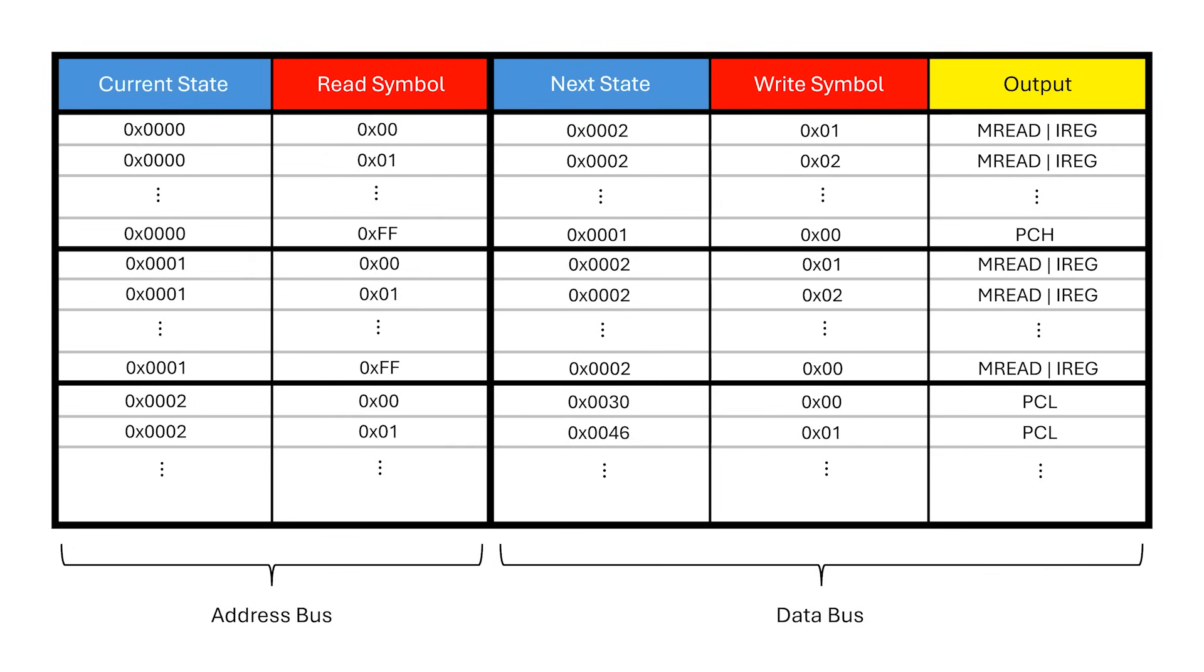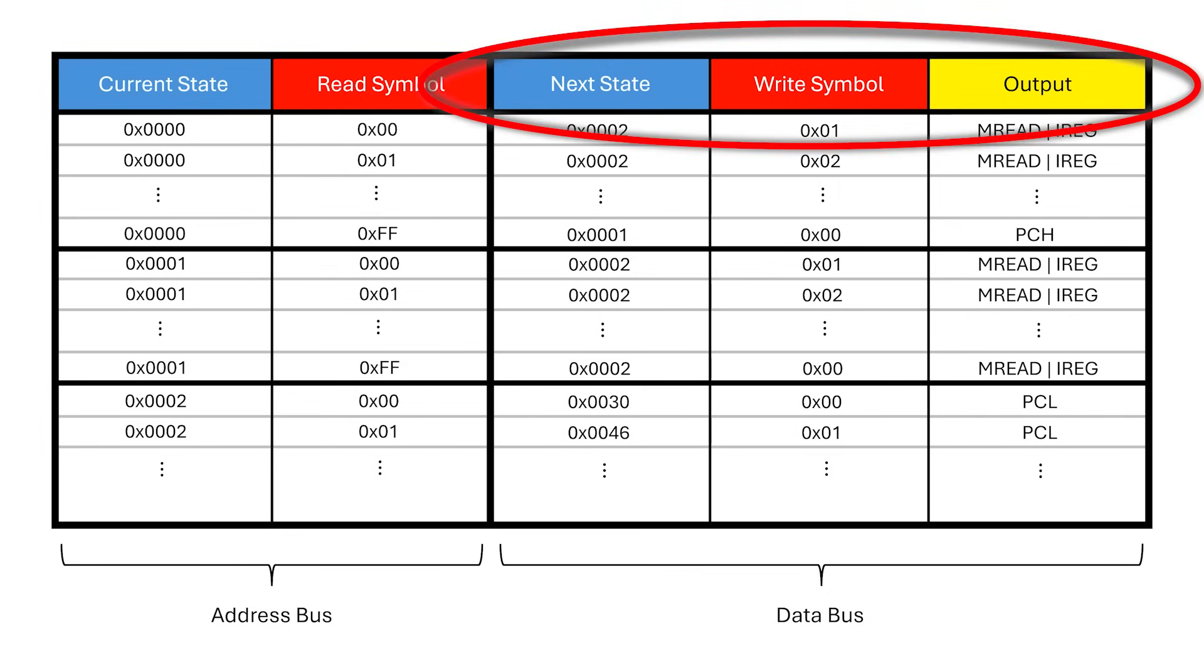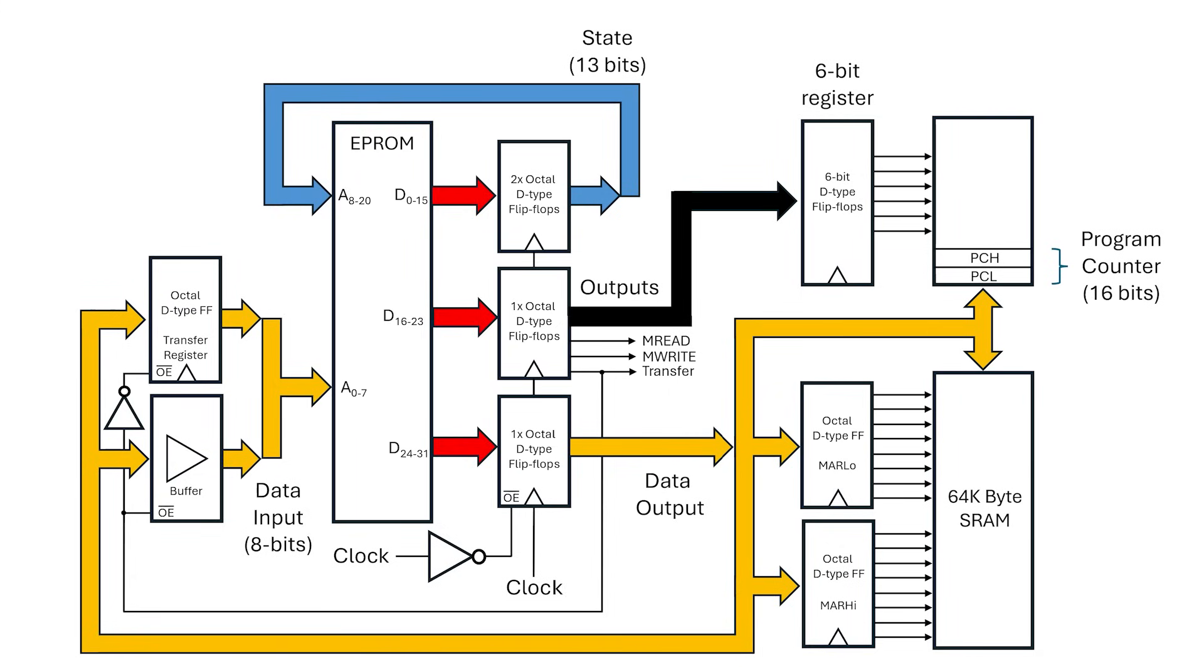The EEPROM stores what's formally called a state transition table. Each clock cycle works like this: Combine the current state with the symbol read from memory. Use that to look up the next state, the symbol to write back to memory in the control signals. On the positive edge of clock, that data is latched into some output flip-flops. The state feeds back to the EEPROM, and the write symbol and control lines go to the memory system.